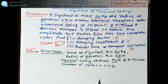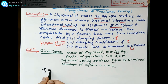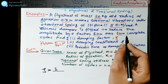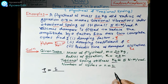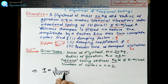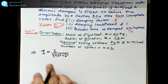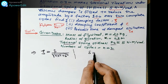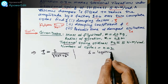We will find the damping factor using the logarithmic decrement approach. Since the cycle amplitudes are given, we can calculate the logarithmic decrement δ, and from δ calculate the damping factor zeta. The formula is: zeta = δ / √(4π² + δ²).